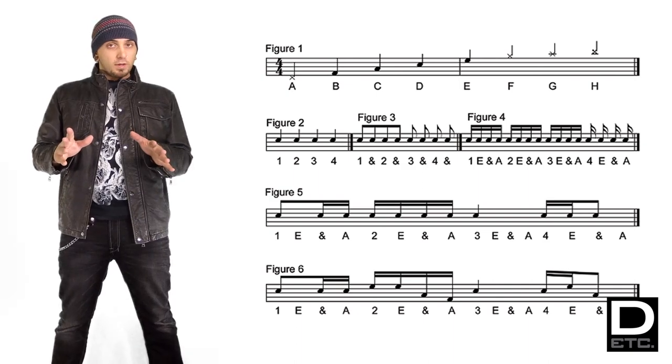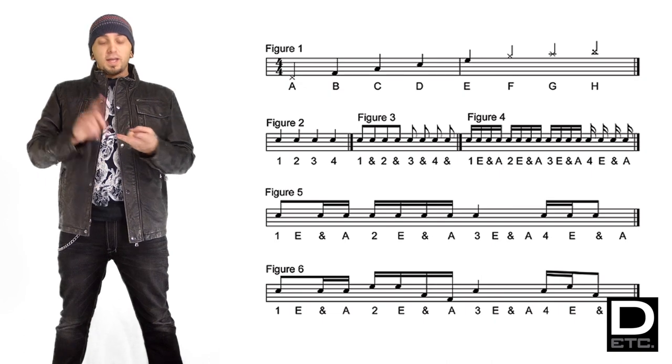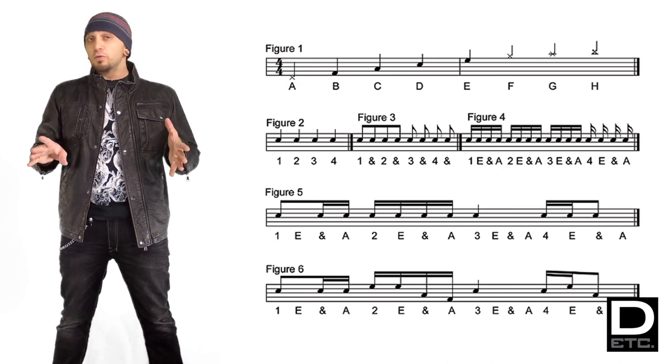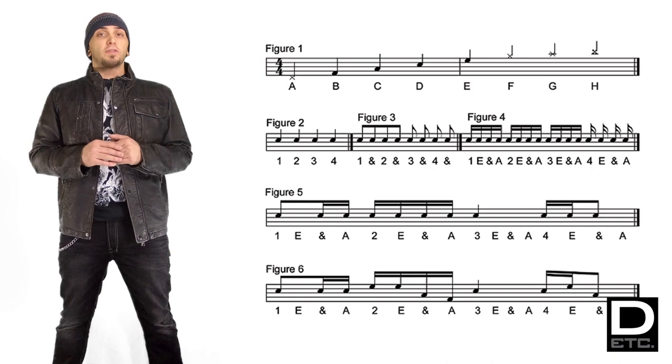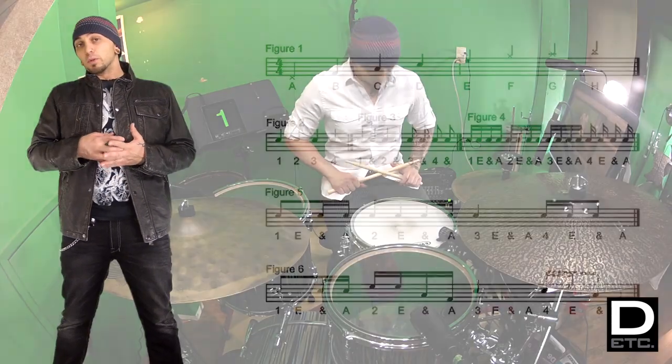To cap this off, let's combine everything we've learned so far: quarter notes, eighth notes, and sixteenth notes. First time through we're going to do it just on the snare drum. Once we've got that comfortable, we're going to put it around the drum set and pick up the tempo a little bit.